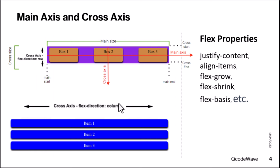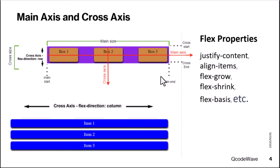For flex-direction row, the cross axis runs vertically; for column, it runs horizontally. The main size refers to the size of the flex container or item along the main axis — for row, this is the width; for column, it is the height. The cross size is along the cross axis — for row it is the height, for column it is the width. Main start and main end indicate the starting and ending points along the main axis, and cross start and cross end indicate the same along the cross axis.